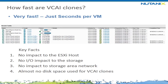So how fast are VCAI clones? They're extremely fast — just a couple of seconds per VM. There's no impact to the host while the clone happens. The only real impact is that vCenter has to acknowledge a new virtual machine, so it really only takes a couple of seconds. There's no IO impact, no impact to the storage network, and there's almost no disk space used for a VCAI clone, so they're very space efficient.